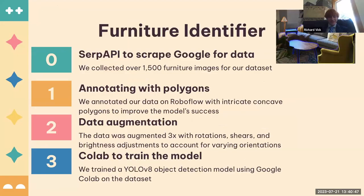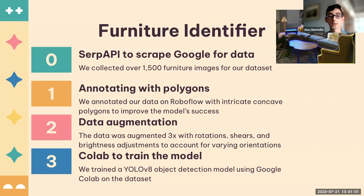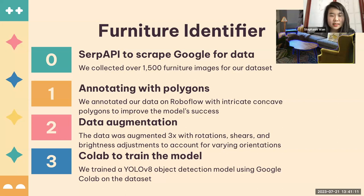We used Serp API to run Colab Notebooks that scraped images off of Google to collect over 1,500 images for our dataset. After uploading these photos to RoboFlow, we annotated the images with concave polygons to ensure the model could accurately distinguish furniture from background or foreground objects. Then for pre-processing, we applied several data augmentations to increase the size of our dataset and to train our model to compensate for variations that might arise in mobile device cameras.